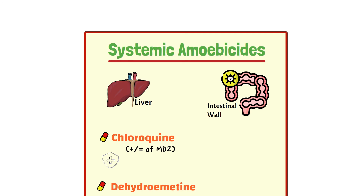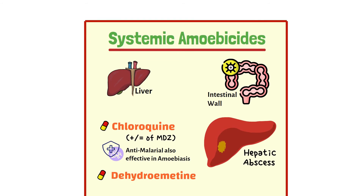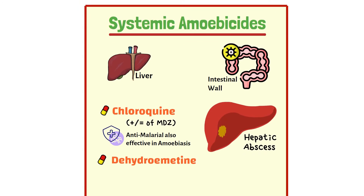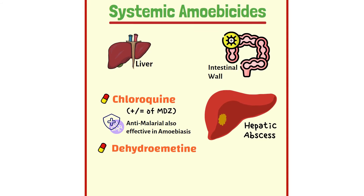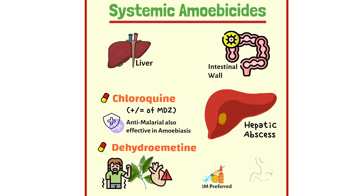Chloroquine is an antimalarial agent and is also effective in amoebiasis. It is the most widely used agent of this class and is effective against hepatic abscess, but not useful for luminal amoebiasis. Dehydroemetine is an emetine alkaloid derivative with some toxicities like cardiotoxicity and neuromuscular weakness, which limit its use. The intramuscular form is preferred over the oral form because oral formulation causes irritation of the GI mucosa.